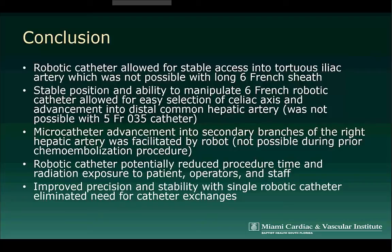In conclusion, the robotic catheter was extremely helpful in performing hepatic chemoembolization in this patient. First, the robotic catheter allowed for stable access into the patient's tortuous iliac artery, which was not possible with the fixed French sheath alone — once the stiff guide wire was removed, the fixed French sheath still resulted in bending due to the significant tortuosity. Second, the stable position and ability to manipulate the robotic catheter in multiple angles allowed for easy selection of the celiac axis and advancement into the distal common hepatic artery, which was not possible with the 5-French 0.35 catheter. Finally, the improved precision and stability with utilization of the single robotic catheter eliminated the need for catheter exchanges.